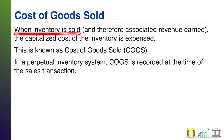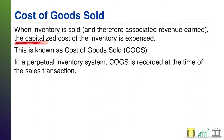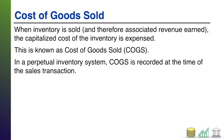However, when you sell the inventory — which is the point at which you are going to earn revenue as part of that sale, whatever you charge your customer — that capitalized cost, whatever you originally paid for that inventory, has to get expensed at that time. The reason being: when you first buy the inventory, you're exchanging one asset for another. When you sell the inventory, you're literally getting rid of it. You add an asset and that asset is going away, so you have to recognize the expense of that asset going away. That is a cost specifically known as cost of goods sold, or often abbreviated COGS.